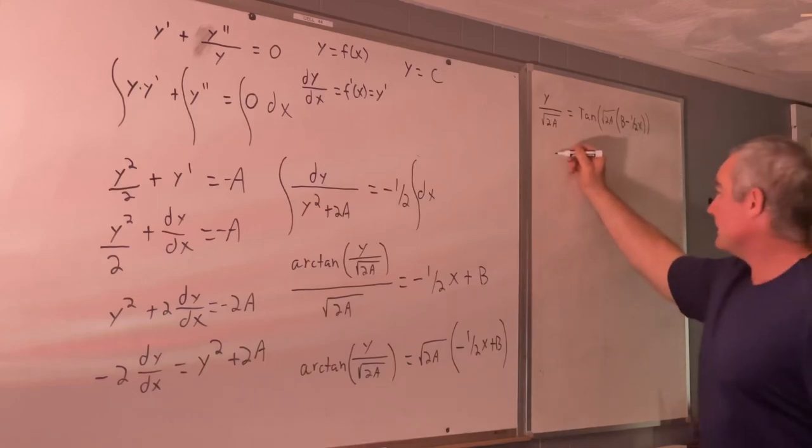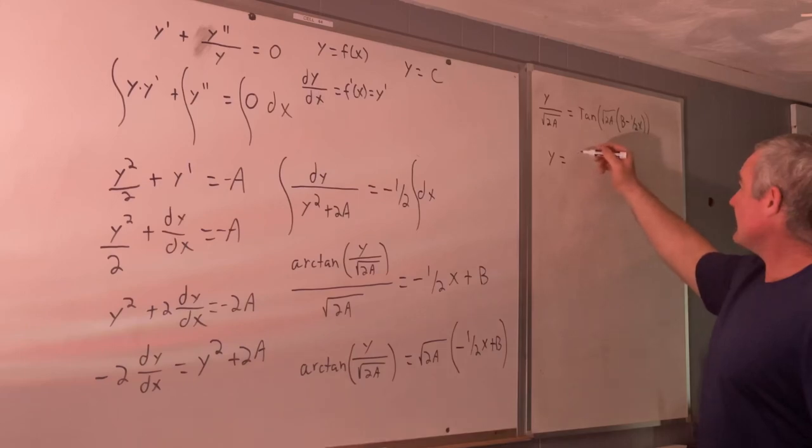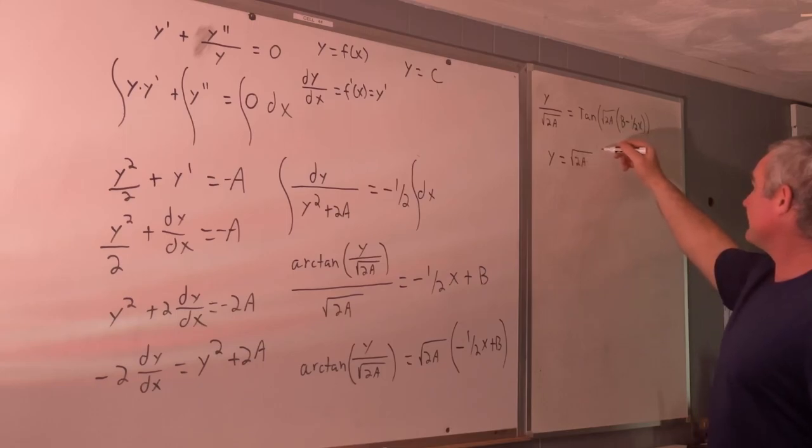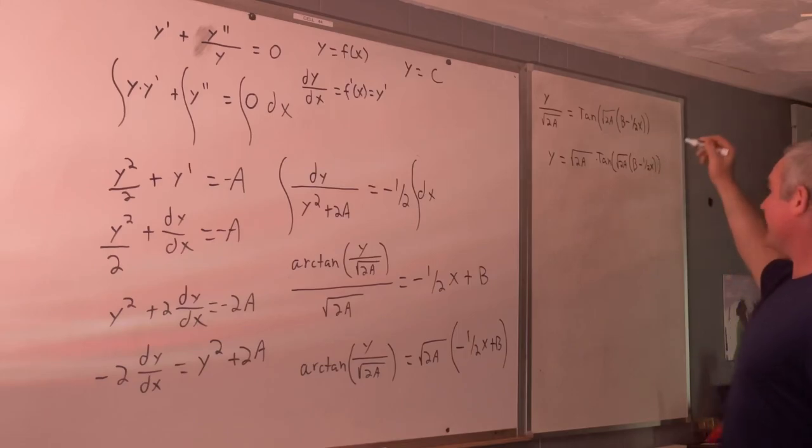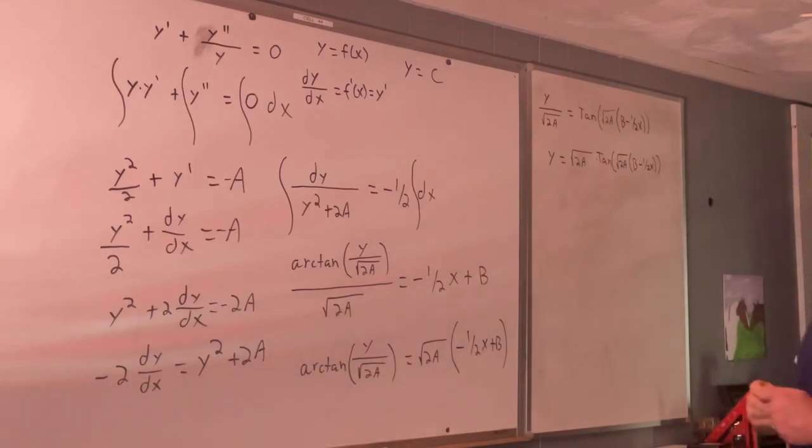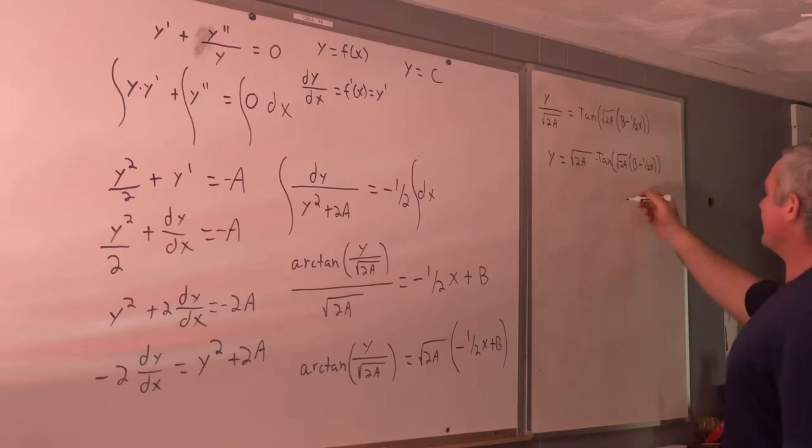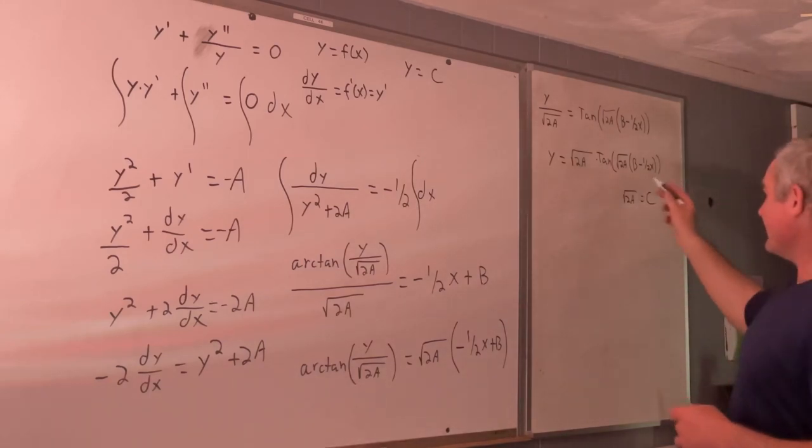So now we're almost done. Now we have y is equal to square root of 2a times the tangent of the square root of 2a times b minus one half x. And then square root of 2a, still, that's still just an arbitrary constant. So we'll just call square root of 2a equal to c. We'll just call that c. All right. So all in all, what we have now, this is our final, this is the final form.